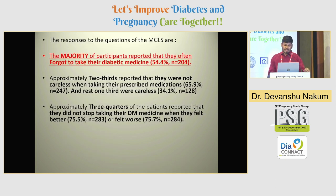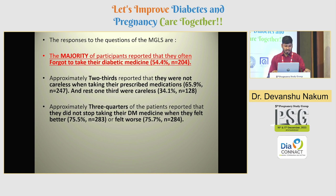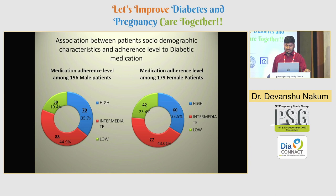From the MGLS score, the majority of participants reported forgetting to take their diabetes medication (54 percent). Two-thirds of patients were not careless when taking their prescribed medication, while one-third were careless. Among these, three-quarters did not stop their medication when they felt better or worse.